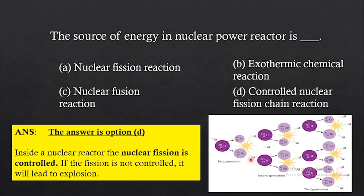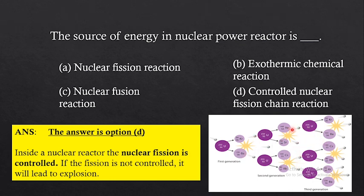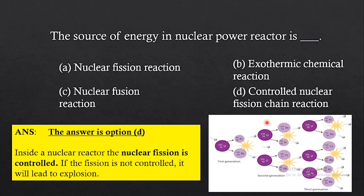When the big nucleus splits into two, a huge amount of energy is released along with two or more neutrons. These neutrons then collide with other uranium nuclei, repeating the same process — this continues as a chain reaction. In a nuclear power reactor, this chain reaction is controlled, unlike in a nuclear bomb where it is uncontrolled. Therefore the correct answer is option D — controlled nuclear fission chain reaction.